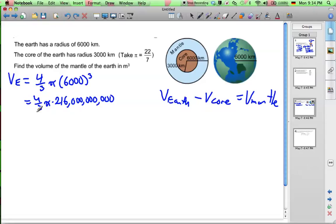Now 216 divided by 3 is going to give me 72. 72 times 4 gives me 288 billion pi. So that's the volume of the earth and let's keep it like that for now.